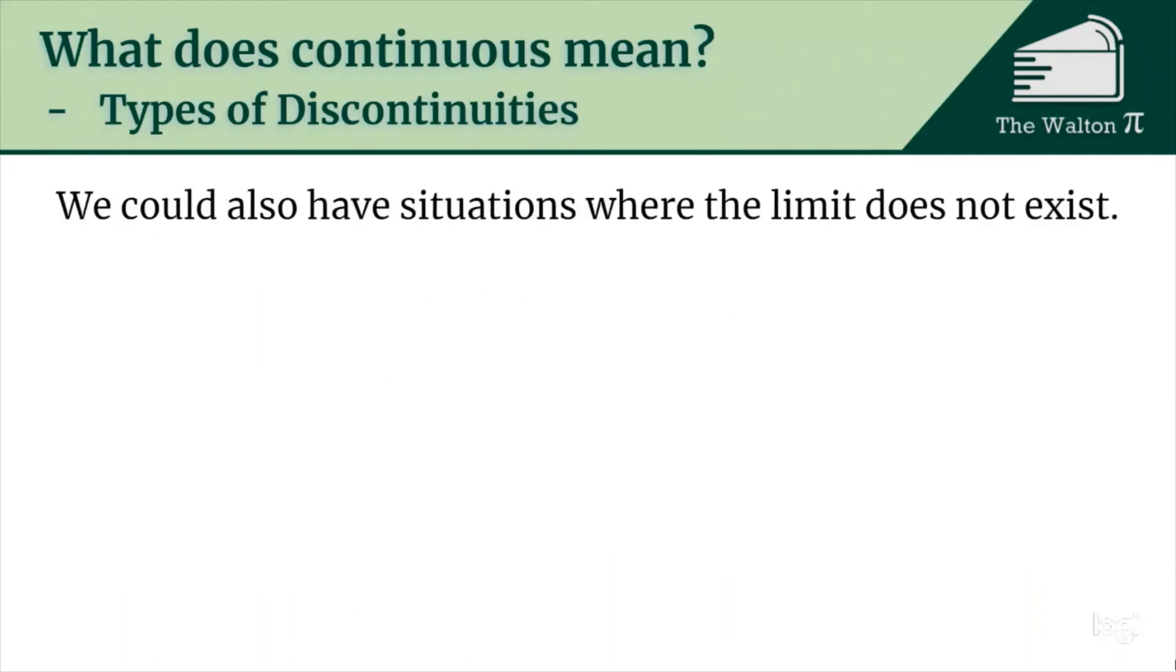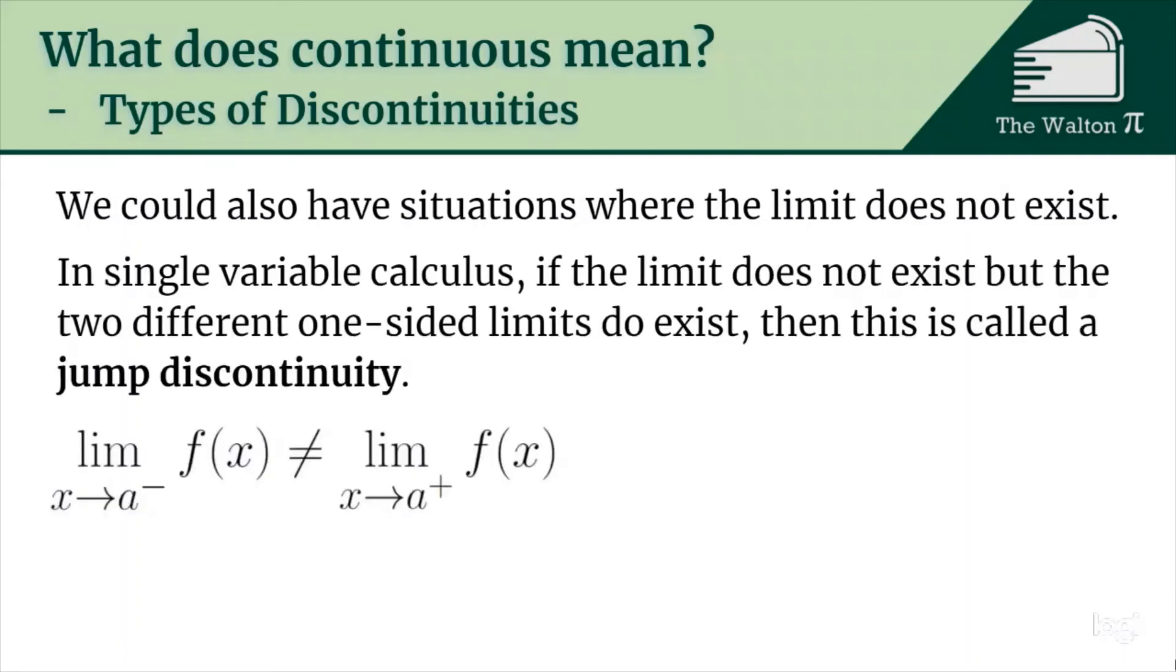We could also have situations where the limit just does not exist. So in single variable calculus, one way that the limit might not exist is if the two different one-sided limits - so the limit as x goes to a from the left and the limit as x goes to a from the right - exist but are different numbers, then this is called a jump discontinuity which would look something like this.